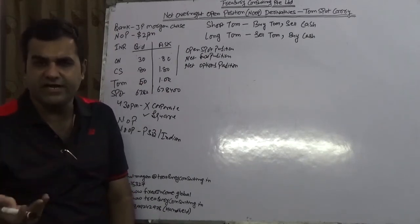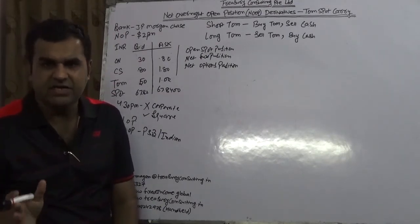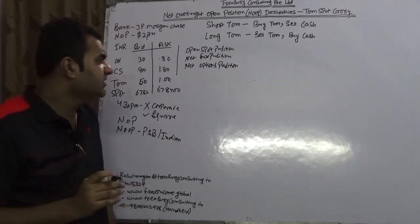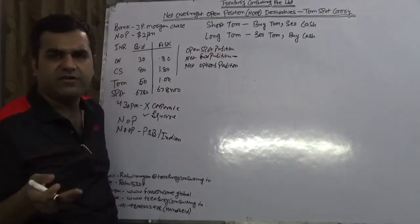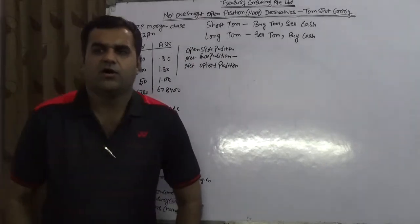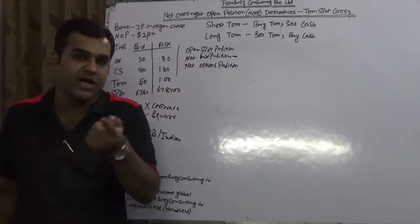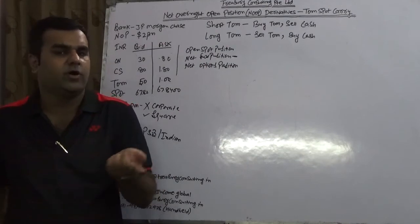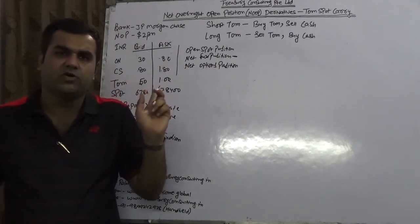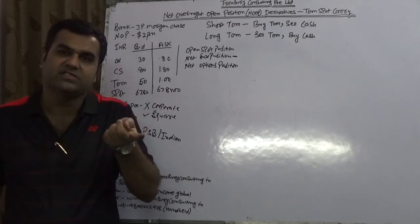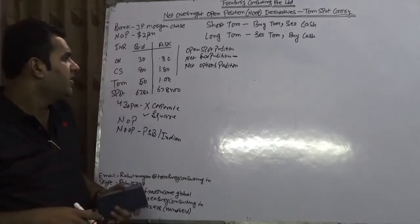As an independent treasury head, I will completely disregard the statement being given by the RBI. This is technically incorrect. But just for the sake of knowledge, the tom spot carry lies here. In any interviews, somebody might come up and say when you do the NOOP reporting, where does the tom spot carry lie? The tom spot carry lies in net forward position. The answer must be coming in your mind that you are writing net spot position and you are talking about spot carry. This is what RBI circular is saying.